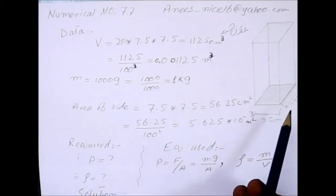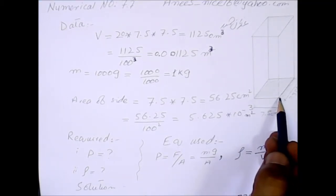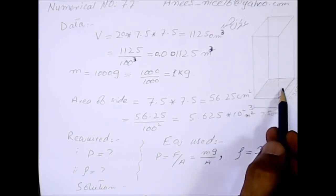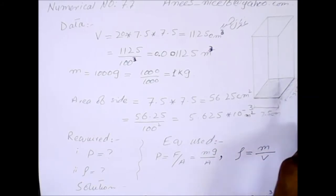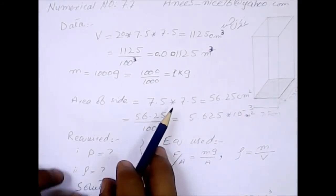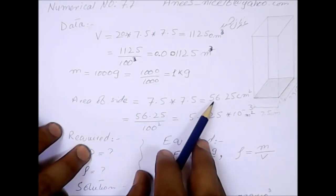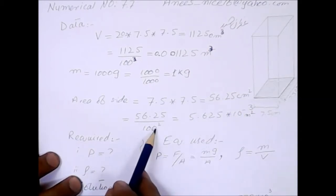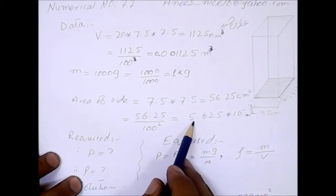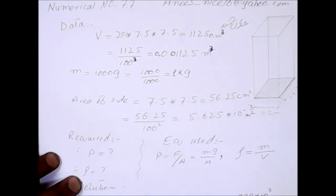Now we have to find the horizontal surface contact area, which will be 7.5 cm × 7.5 cm, giving 56.25 cm². Converting to meter square by dividing by 100², the answer is 5.625 × 10⁻³ m².